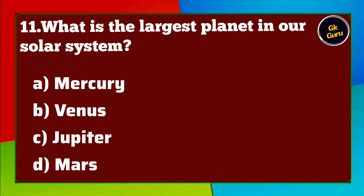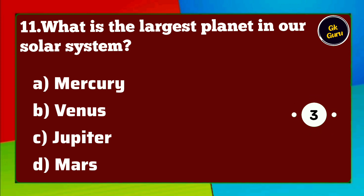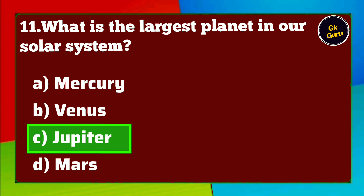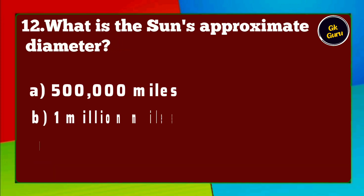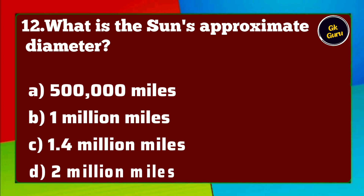What is the largest planet in our solar system? A. Mercury B. Venus C. Jupiter D. Mars. Answer C. Jupiter.